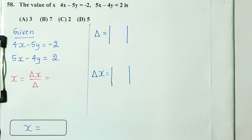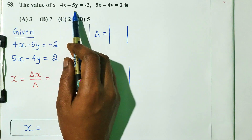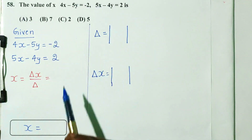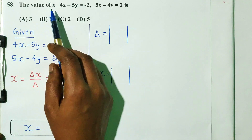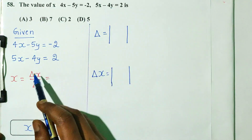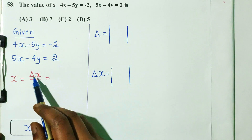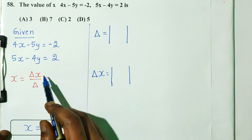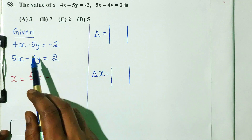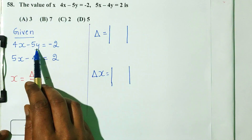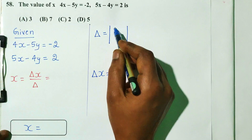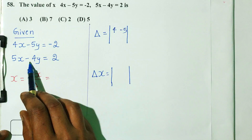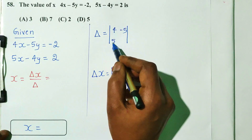Question number 58. Find the value of x given: 4x minus 5y equals minus 2 and 5x minus 4y equals 2. There are 4 options. The formula for Cramer's rule is x equals delta x by delta. The coefficient matrix is: 4, minus 5, 5, minus 4.